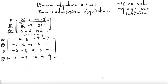Hi everyone, welcome to another episode of Linear Algebra. In this video, we're going to talk about the row reduction algorithm. Basically, it allows you to transform any kind of matrix into the echelon form of that matrix.